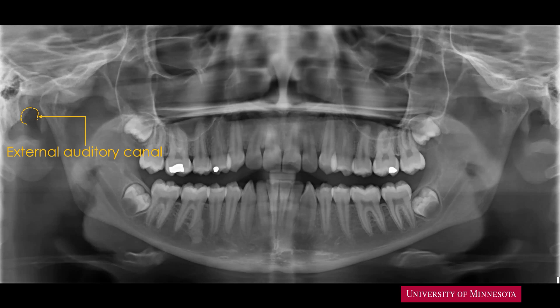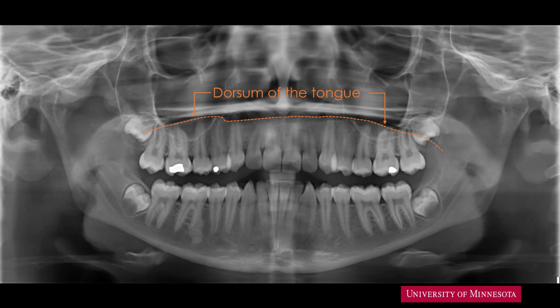Inferior to the hard palate is a line of contrast, with a radiolucent band between this line of contrast and the hard palate. The line of contrast is the dorsum of the tongue. Ideally, a panoramic radiograph is taken with the dorsum of the tongue in contact with the hard palate, so the dorsum of the tongue should not be visible. Frequently, patients are unable to hold the tongue on the roof of the mouth, and therefore the dorsum of the tongue may become visible.